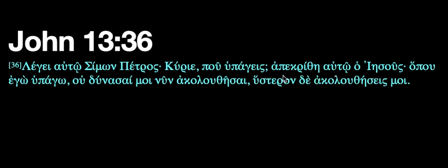Notice we've got the 'apo' — so 'apo' means 'from'. Now 'apekrithe' — the 'ei' is the sign that this is going to be a past tense, so it's going to be aorist past tense. Normally that would be aorist passive, but there's no active form. So Jesus answered him, gave an answer to him — 'auto' is going to be dative case.